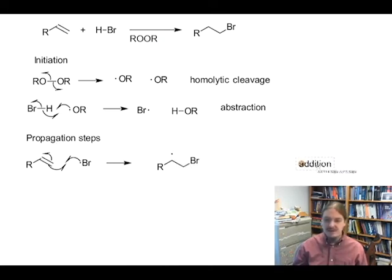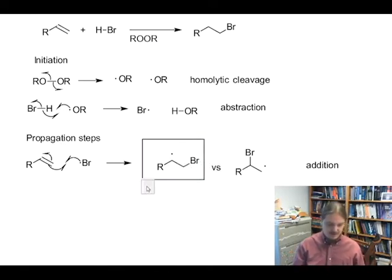But you might ask yourself, why do we get this radical addition product? In other words, why do we get the regioselectivity or the regiochemical outcome that we observe? What is stopping us from getting this other radical addition product? And the answer is really straightforward. The radical that forms preferentially is secondary. The other radical that could form in this addition reaction is primary. And secondary radicals are more stable than primary radicals.